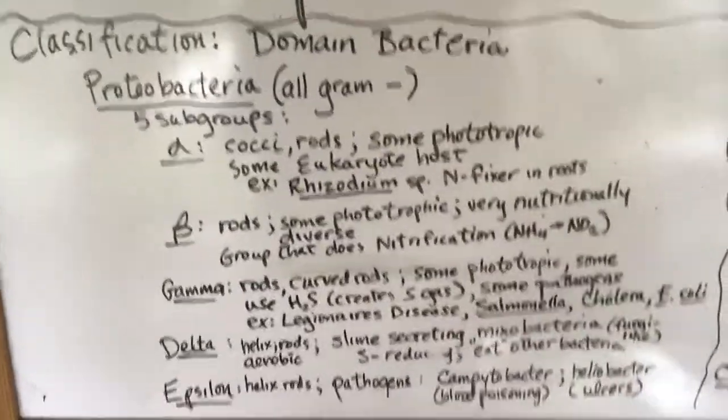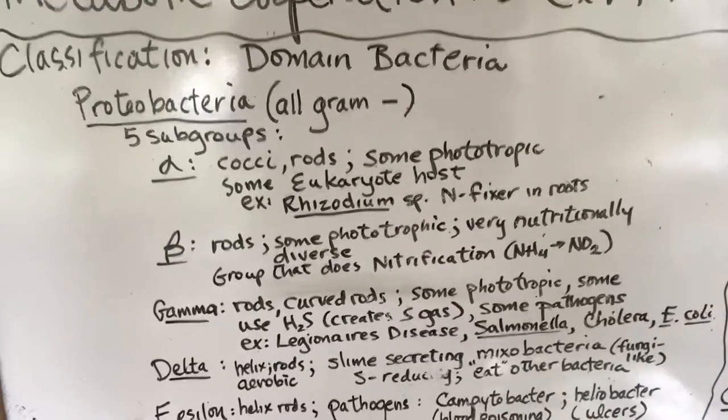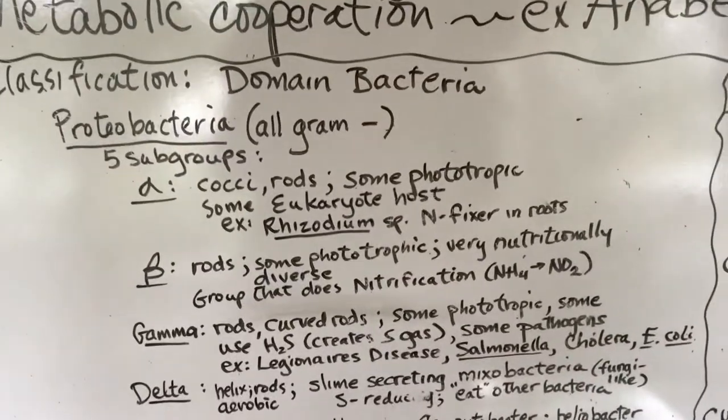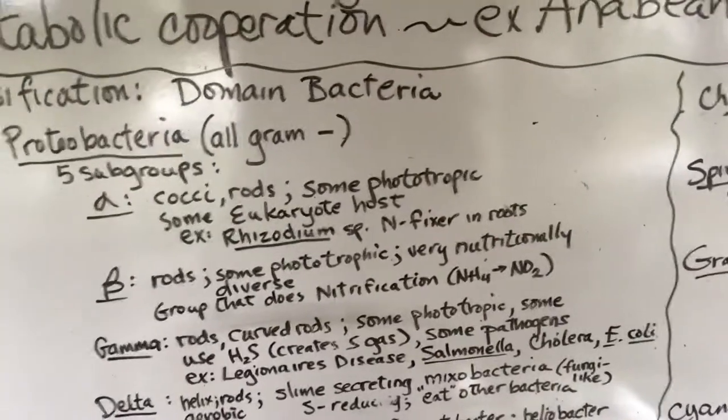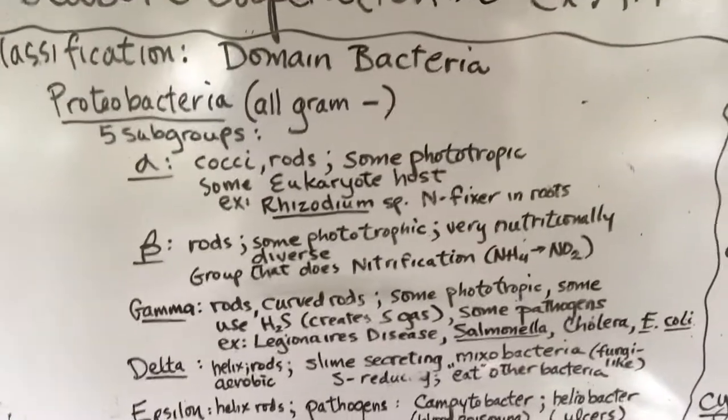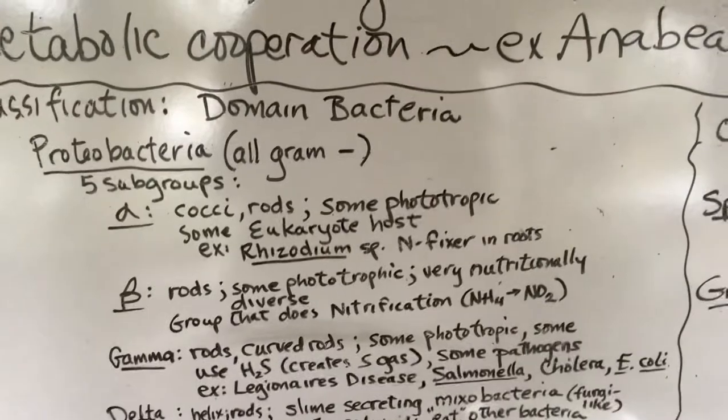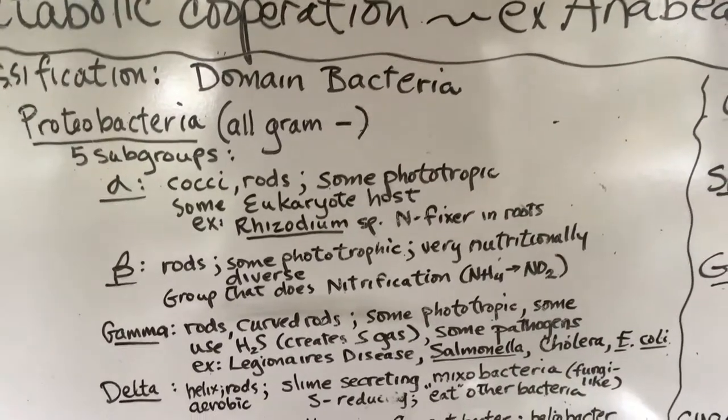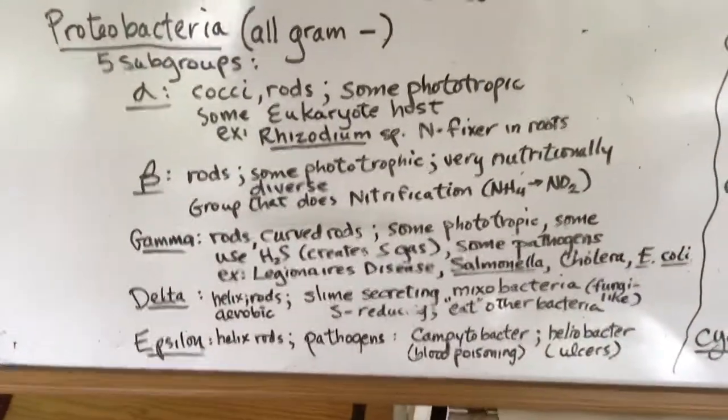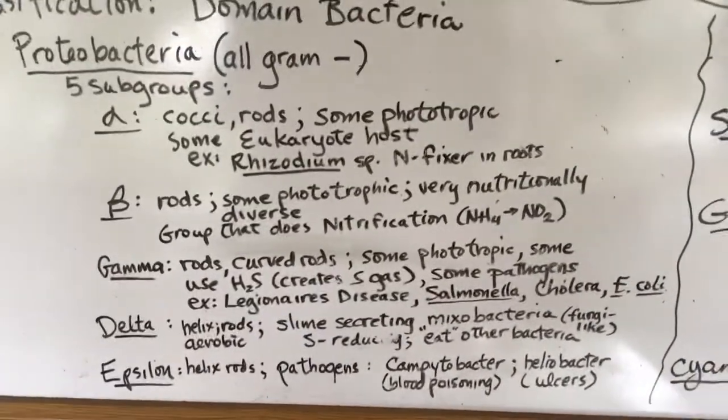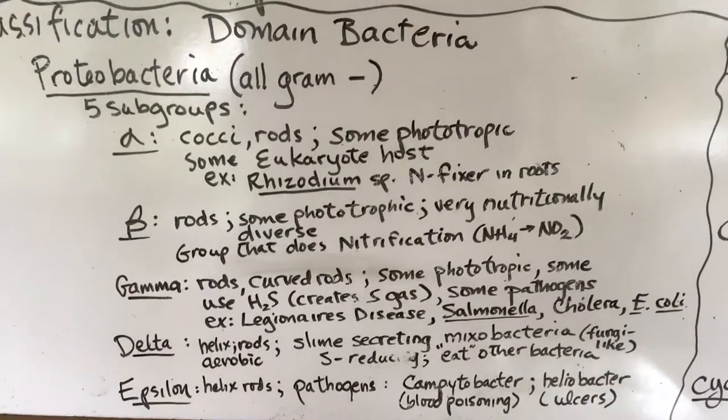The beta are mostly rods, some are phototrophic. They're very nutritionally diverse - they probably do all four types of nutrition. They are the group that does nitrification in the nitrogen cycle.